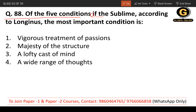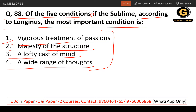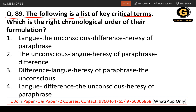Question 88: Of the five conditions of the sublime according to Longinus, the most important condition is — vehement treatment of passions, majesty of structure, a lofty cast of mind, or a wide range of thoughts? The most important condition is a lofty cast of mind. If you have a lofty cast of mind, you can create sublimity in any work.